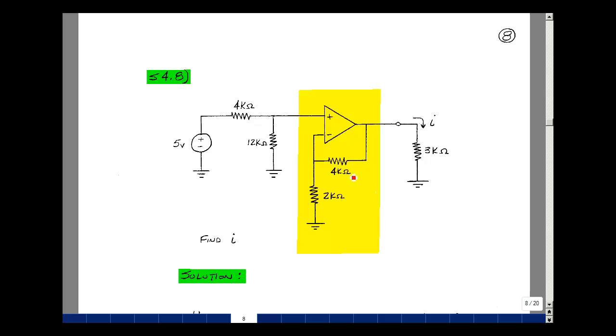Given this op-amp circuit with some resistors, a 5-volt source, and a 3K load, can you find the current in the load?